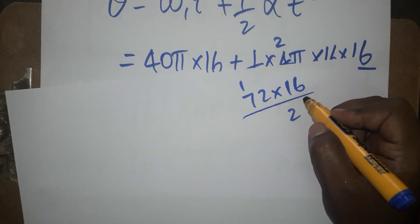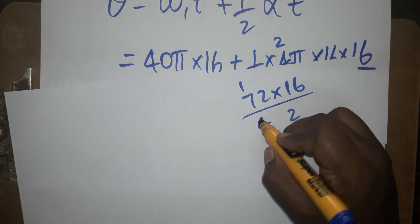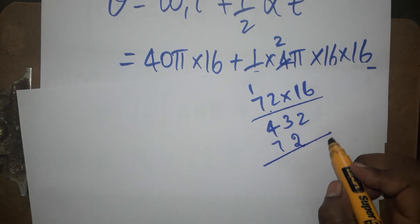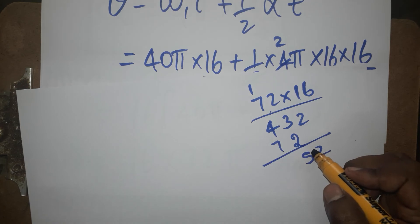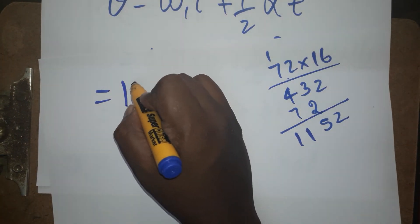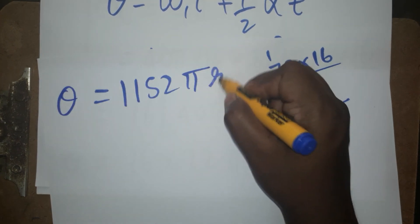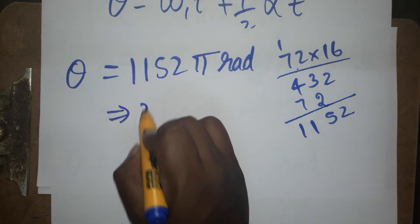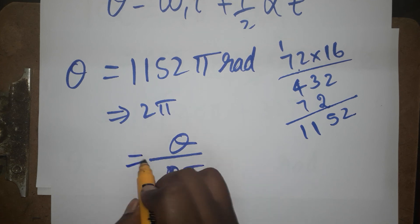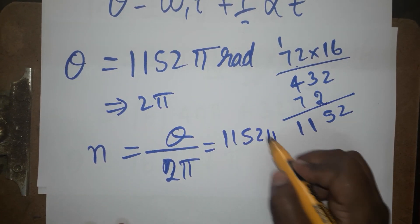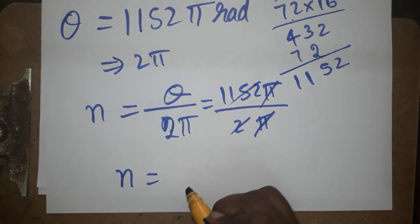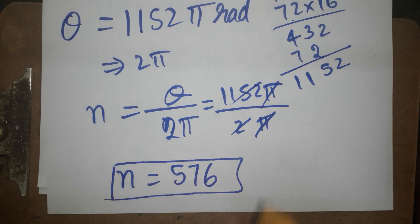Multiplying 72 × 16 gives 1152. So θ = 1152π radians. This is the total angular displacement in radians. In one full rotation there are 2π radians, so the number of rotations n = θ / 2π = 1152π / 2π. The π cancels, giving n = 576. So in 16 seconds the object rotates 576 times — that is 576 full 360-degree rotations.